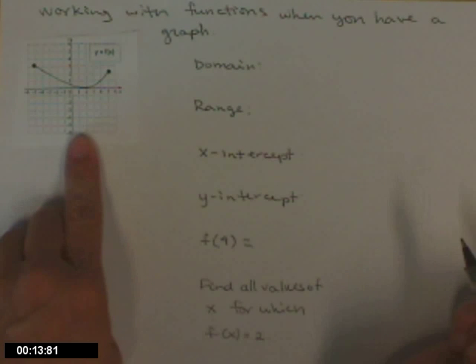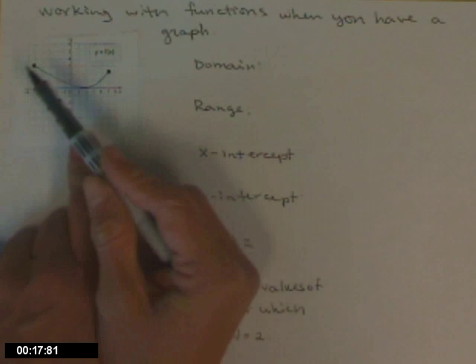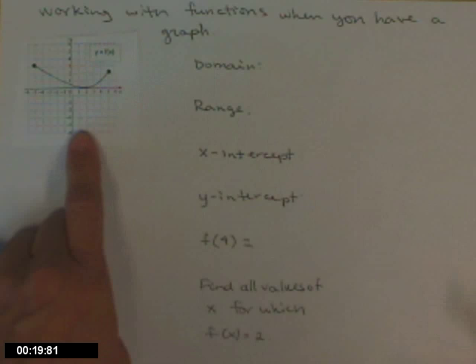First thing I'll ask for is, what is the domain of this function? Domain is a set of x values. On this one, you'll notice I have big old dots at the end of my graph. That means the graph stops there and doesn't continue on. Without those dots, assume that the graph goes on forever.